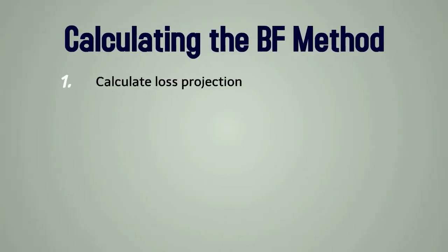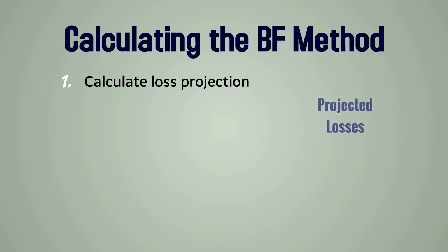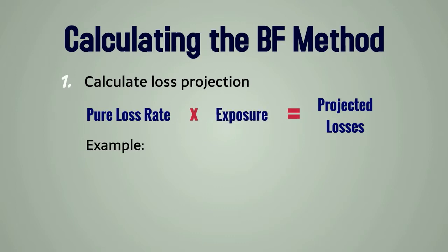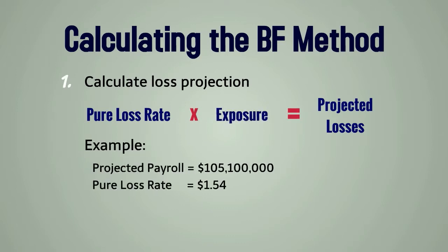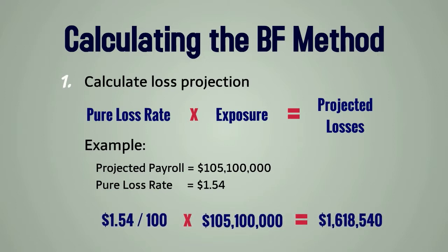Our first step is to calculate the loss projection. As we have seen in some other training videos, projected losses equals the pure loss rate times exposure. In this example, we will assume the projected payroll is $105,100,000 and the pure loss rate selected was $1.54. So our projected losses equals $1,618,540.